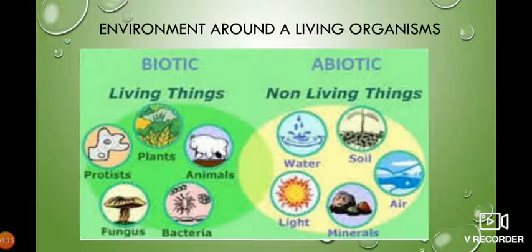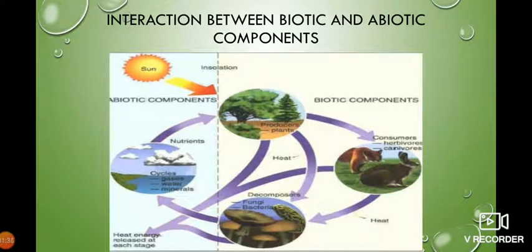The abiotic component consists of all the non-living things around you, including water, soil, air, light, minerals, etc. There is always an exchange happening between the biotic and the abiotic components.